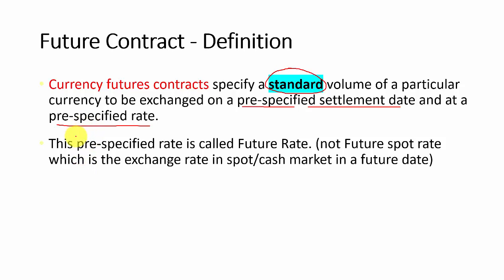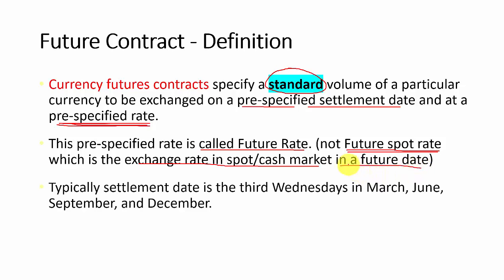The pre-specified rate mentioned is normally called the future rate, and it is not the same as the future spot rate. The future spot rate refers to the exchange rate in the spot market or cash market at a future date — say, January 5th, 2050.